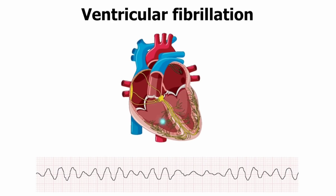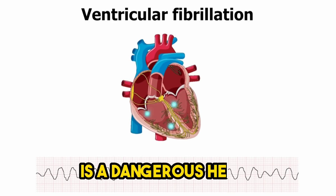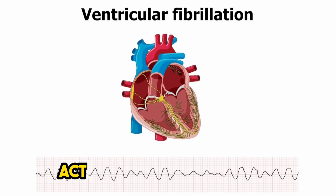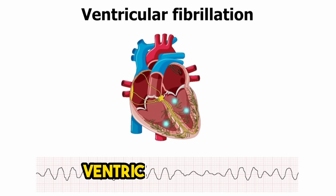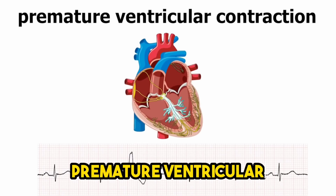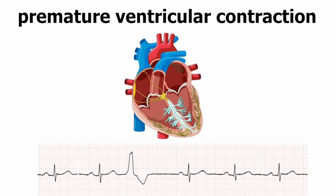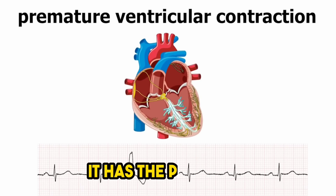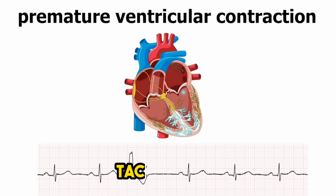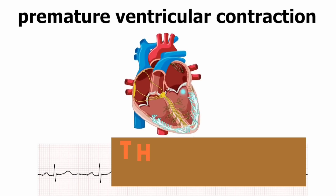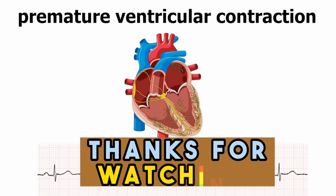Ventricular fibrillation, or VF, is a dangerous heart arrhythmia that can lead to death. It happens when the heart's electrical activity becomes disrupted and the lower chambers, the ventricles, contract in an unsynchronized, fast manner. Premature ventricular contractions are a form of arrhythmia that happen when the bottom chambers of the heart, the ventricles, contract prematurely. They have the potential to cause ventricular tachycardia or ventricular fibrillation.